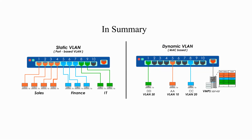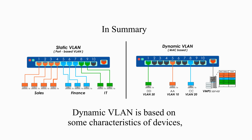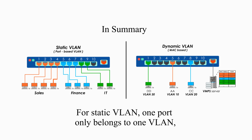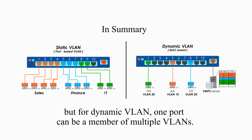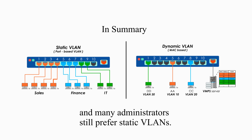In summary, static VLAN requires manual assignment of ports to a VLAN. Dynamic VLAN is based on some characteristics of devices, normally MAC address. For static VLAN, one port only belongs to one VLAN. But for dynamic VLAN, one port can be a member of multiple VLANs. Dynamic VLAN is flexible, but more complex, and many administrators still prefer static VLANs.